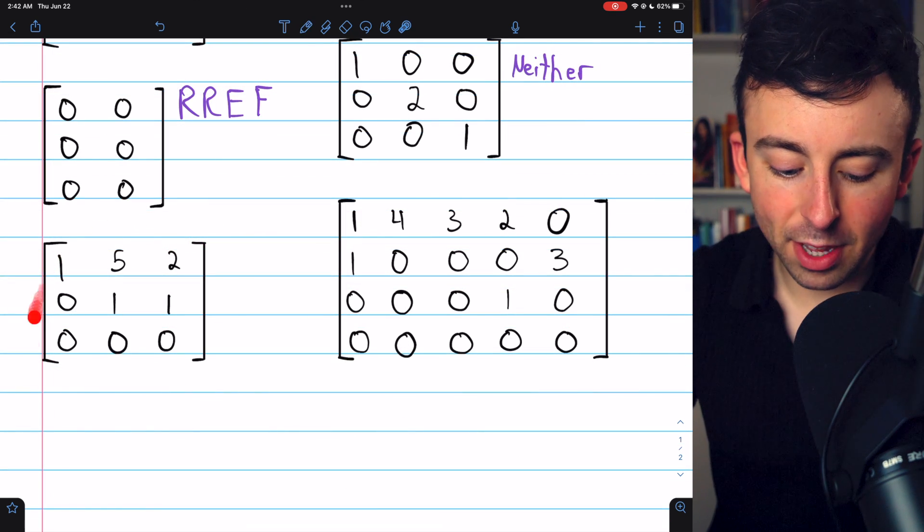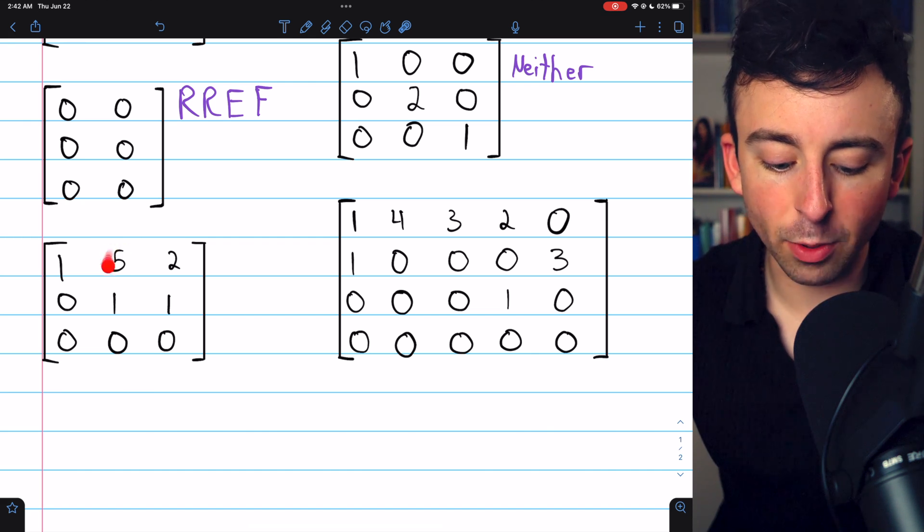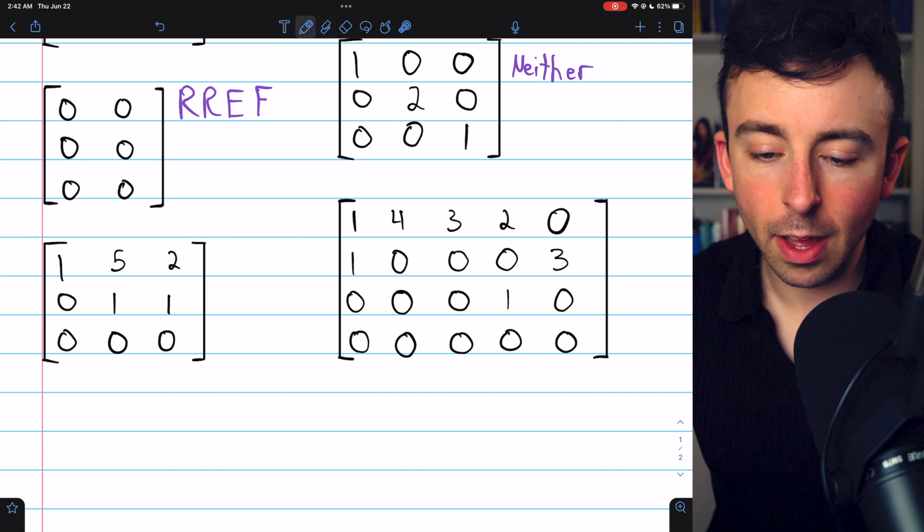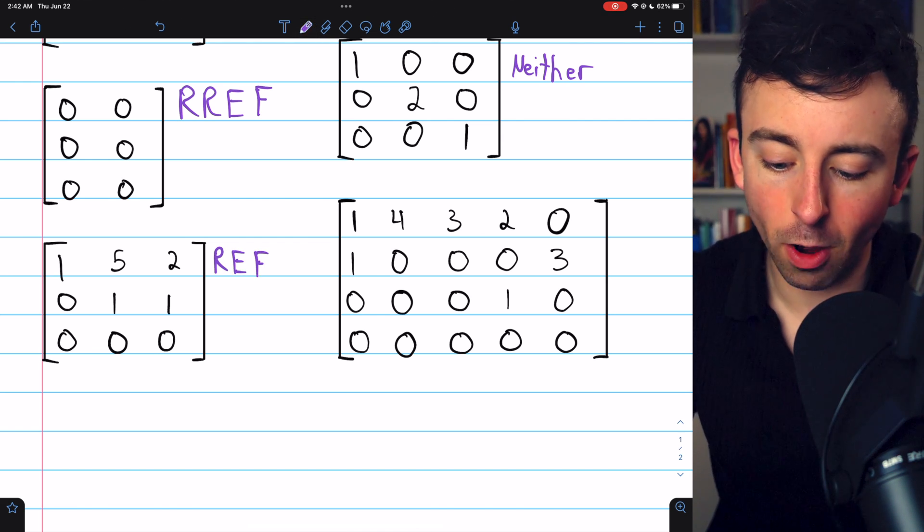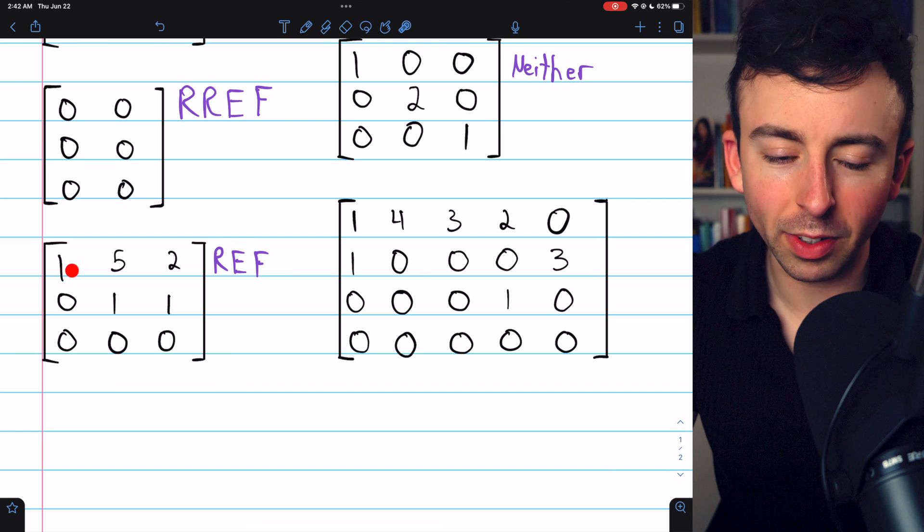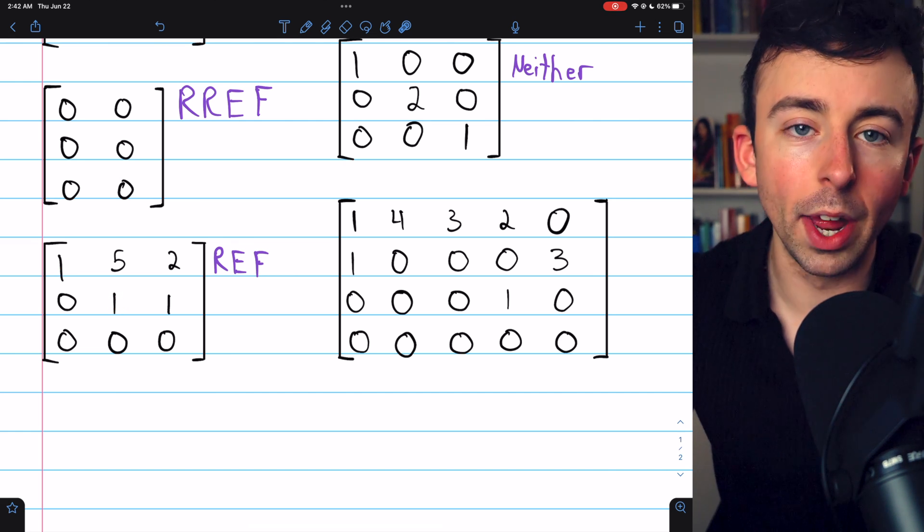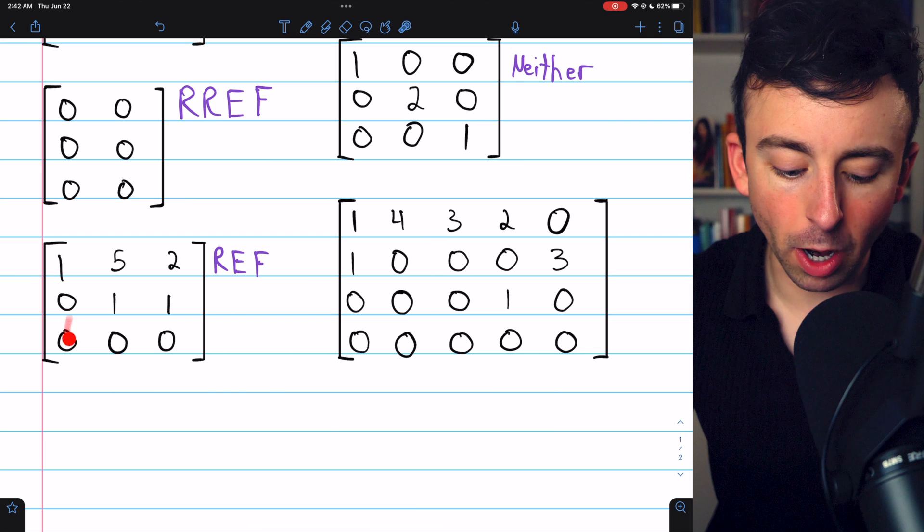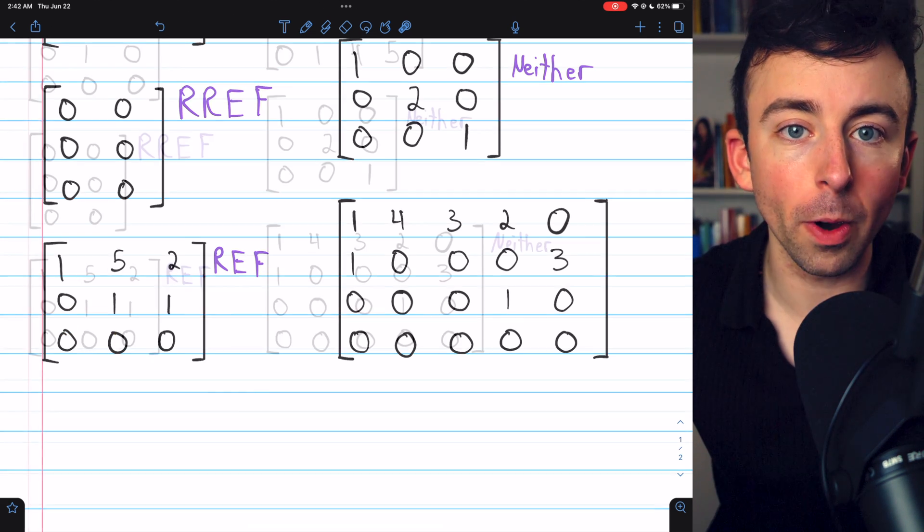Last two examples. This matrix here is not in reduced row echelon form because there is a non-zero entry above this leading one. However, it is in row echelon form because all of the non-zero rows have leading ones. Each one occurs further to the right than the leading one above it and there are zeros below the leading ones. So it's in row echelon form.